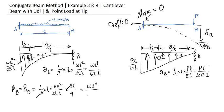So it comes WL to the power 4 by 8EI. It is the deflection downwards. In this case, delta B equals area of this triangle, that is equals to half L times PL by EI.